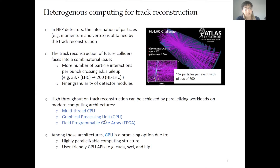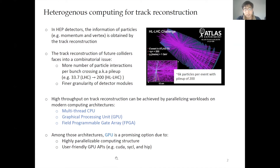We want to achieve high throughput on track construction by parallelizing algorithms on modern computing architectures, which includes multi-core CPUs, GPUs, and also FPGAs. Among those three architectures, GPU is a promising option due to its highly parallelizable computing structure, and there are also user-friendly GPU APIs which include CUDA, SYCL, and HIP.